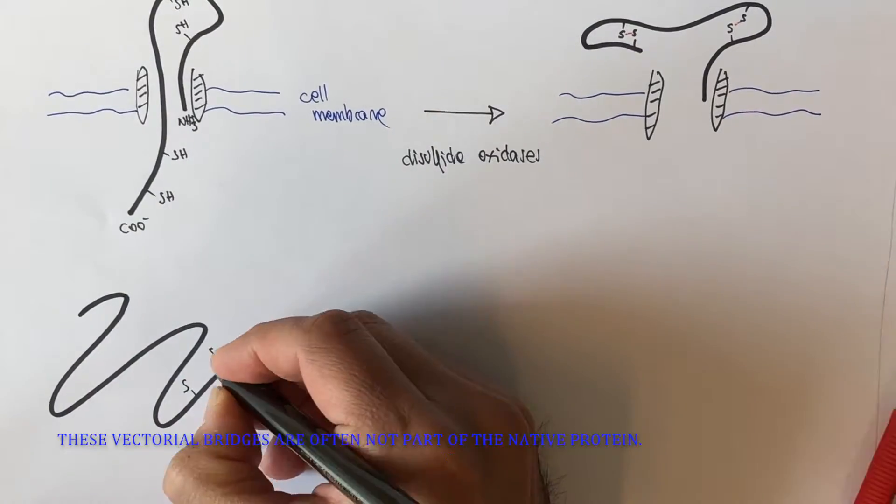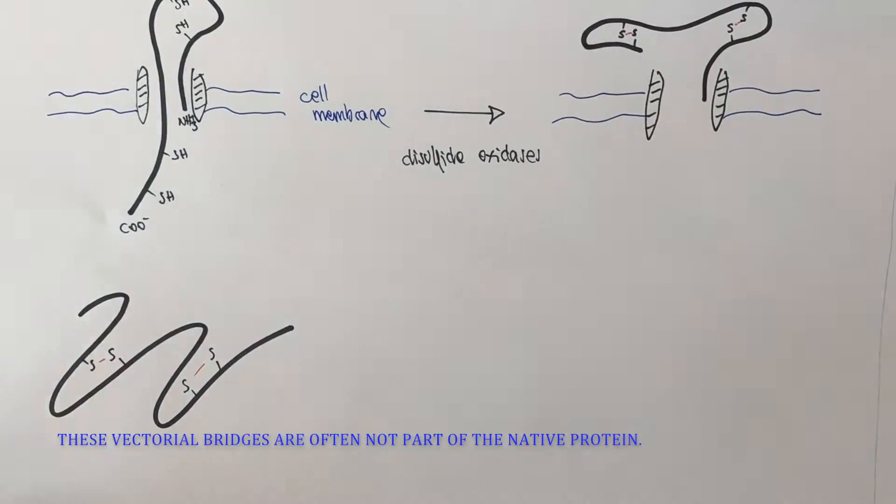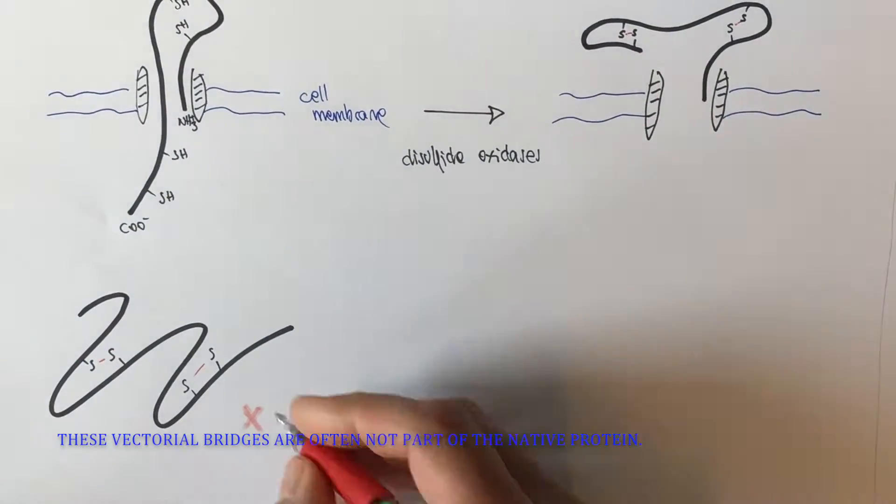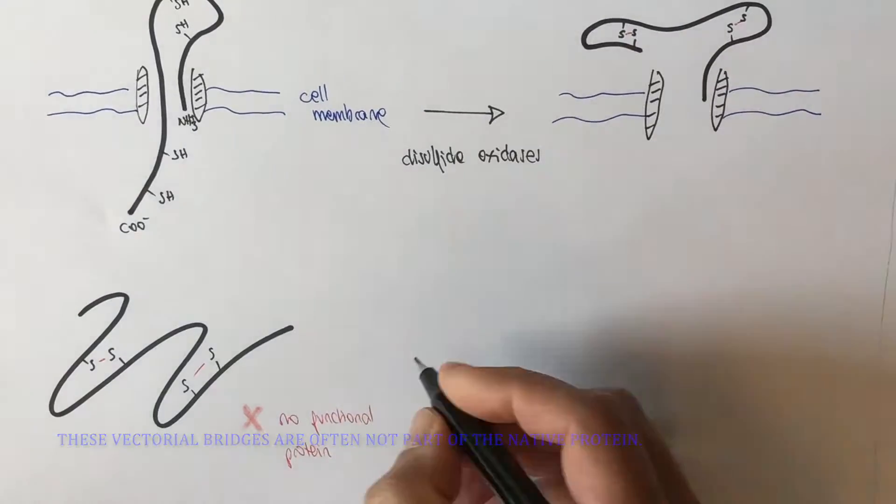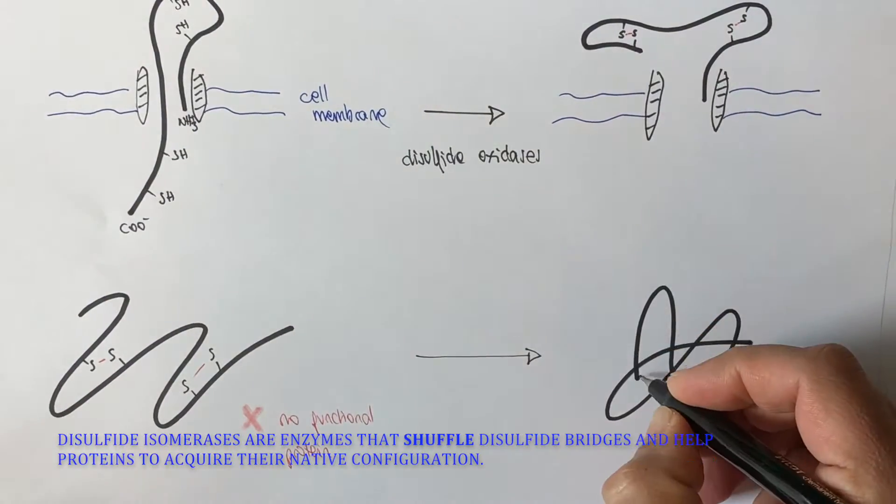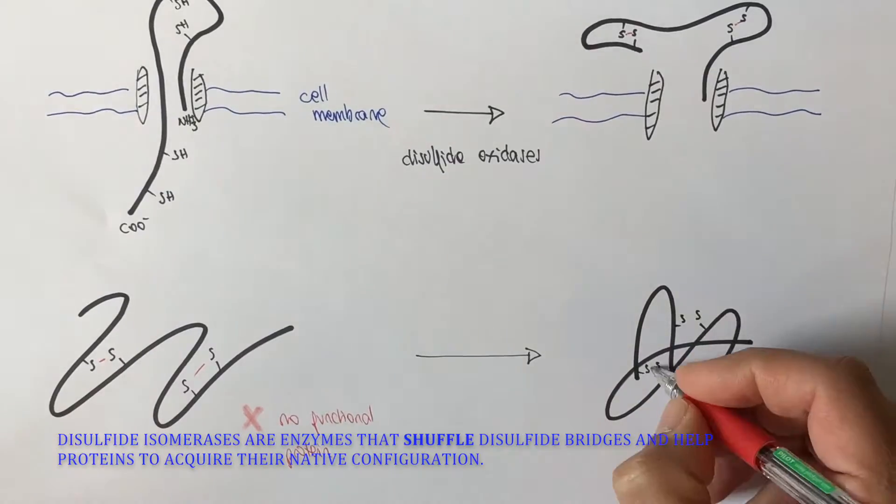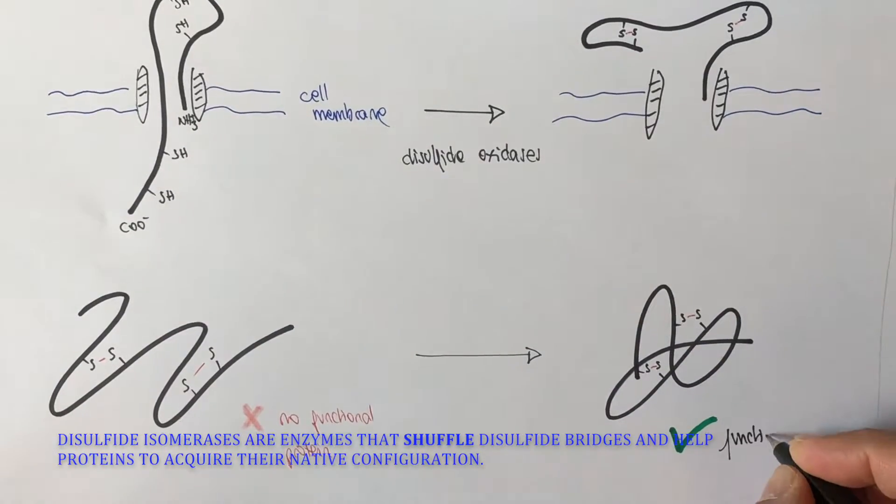However, these vectorial bridges are often not part of the native protein conformation. Disulfide isomerases are enzymes that shuffle the disulfide bridges and help the protein to acquire its native conformation.